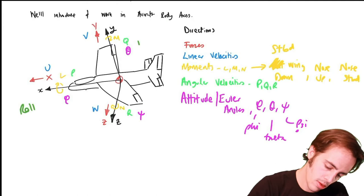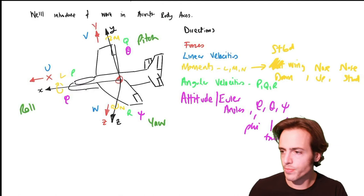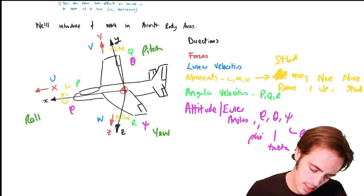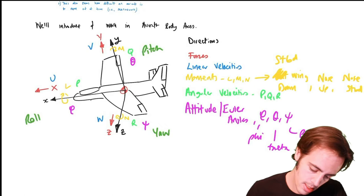We've got roll, pitch, and yaw. So our diagram has: linear velocities u, v, and w; moments l, m, and n; angular rates p, q, and r; and angular displacements phi, theta, and psi.